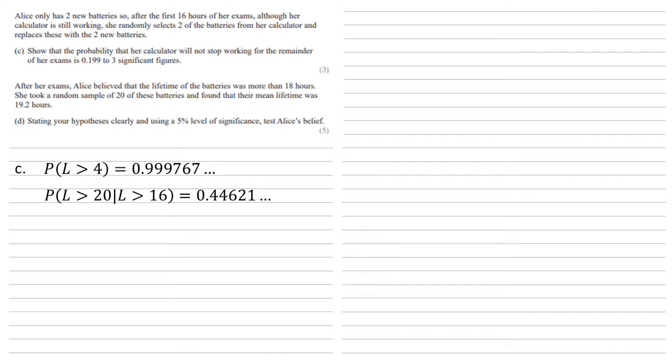We've got two batteries that have a probability 0.999767, two batteries with a probability of 0.44621 of lasting. So the probability of the calculator working is the first answer squared times by the second answer squared, which is 0.199 as required.